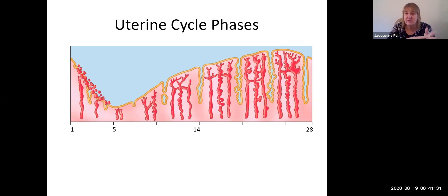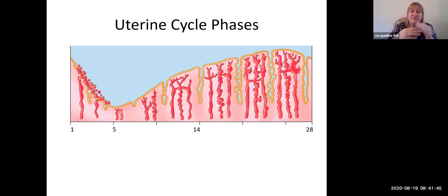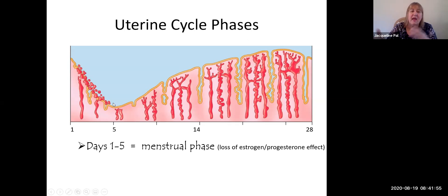In the uterine cycle, day one is the start of the menstrual period. Day one, no matter where you are, is determined by the day you actually start your period — not the day it was due to start. The first five days, the functional layer of the uterus is sloughing, as shown in this diagram where you can see it getting smaller and smaller. Days one through five are called the menstrual phase.